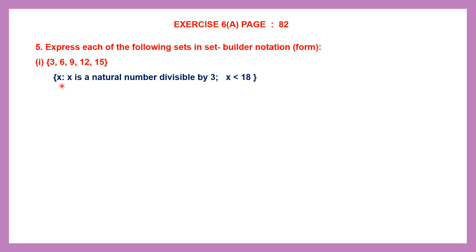Another way of writing it is: x is such that x is a multiple of 3 and x is less than 18. You can also say x is a natural number divisible by 3 and x is less than or equal to 15. If you're using less than or equal to, then it includes 15 itself. So there are different ways of writing the set builder form — it tells us what the elements inside a set will be, giving us a rule or statement rather than the actual elements.